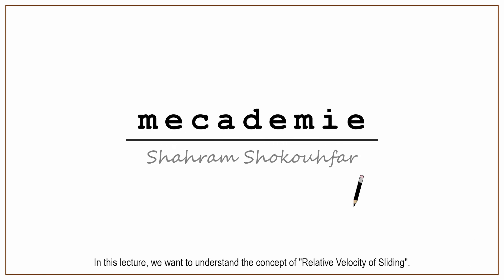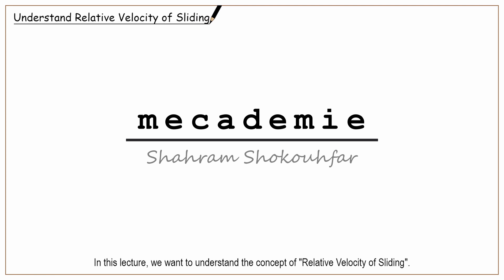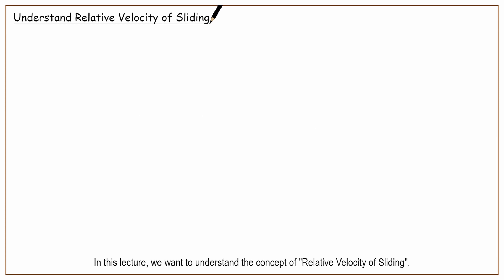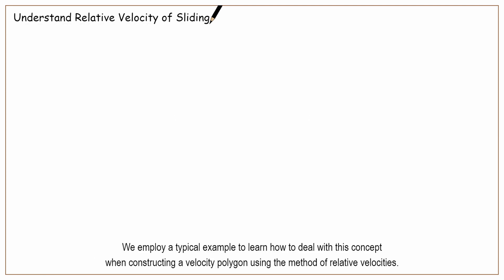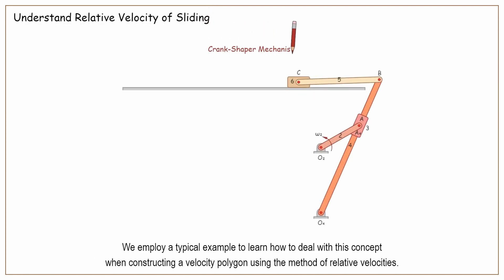In this lecture, we want to understand the concept of relative velocity of sliding. We employ a typical example to learn how to deal with this concept when constructing a velocity polygon using the method of relative velocities.